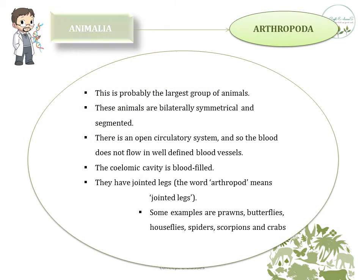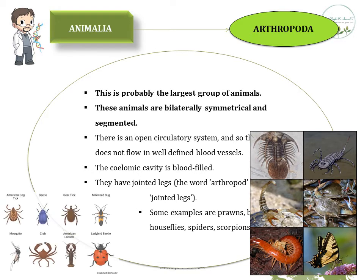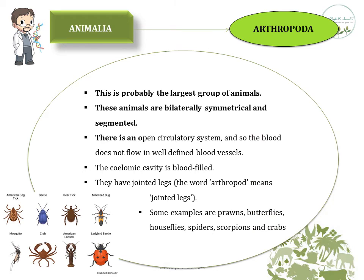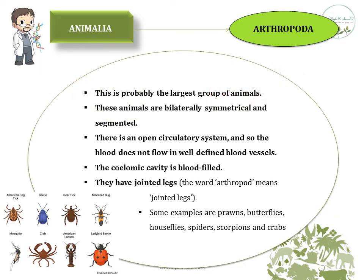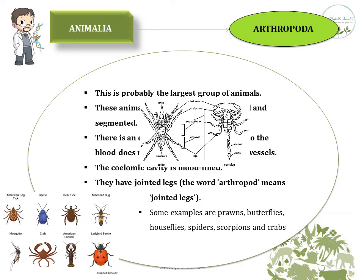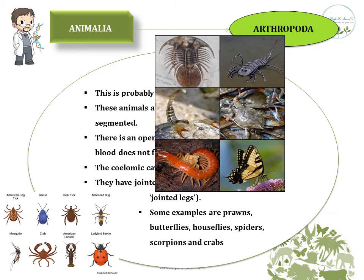The sixth division under kingdom Animalia is Arthropoda, probably the largest group of animals. These animals are bilaterally symmetrical and segmented. They have an open circulatory system, meaning there are no vessels to contain the blood — it flows freely through the cavities in the body, so the coelomic cavity is blood-filled. They have jointed legs, which is why they are called arthropods. Examples are prawns, butterflies, houseflies, spiders, scorpions, and crabs.